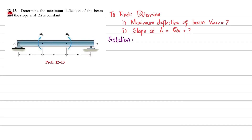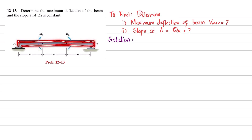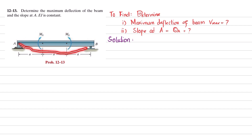Welcome back. Problem 12-13: determine the maximum deflection of the beam and slope at A. EI is constant. This is the beam — there is a pin support at point A and a roller support at point B. At a distance of a we have a moment M₀ which is counterclockwise, and at this point we also have a counterclockwise moment. Due to these moments the beam will bend, and we have to find the maximum deflection and slope at A.